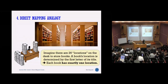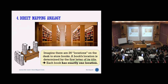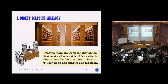In direct mapping, there is exactly one location for each block of data — like a library where every book goes to one place determined by the first letter of its title. In direct map cache, when you take data from memory and place it in cache, that data can only go to one particular cache location. Every address maps to exactly one cache line — there is no ambiguity.